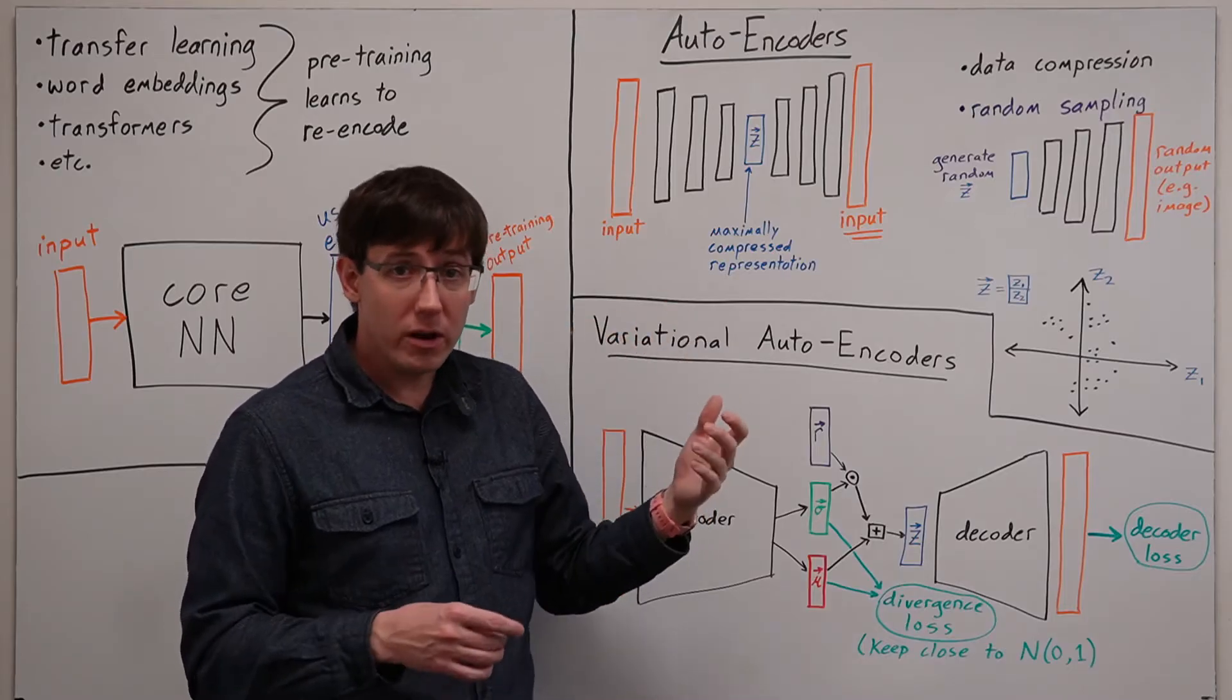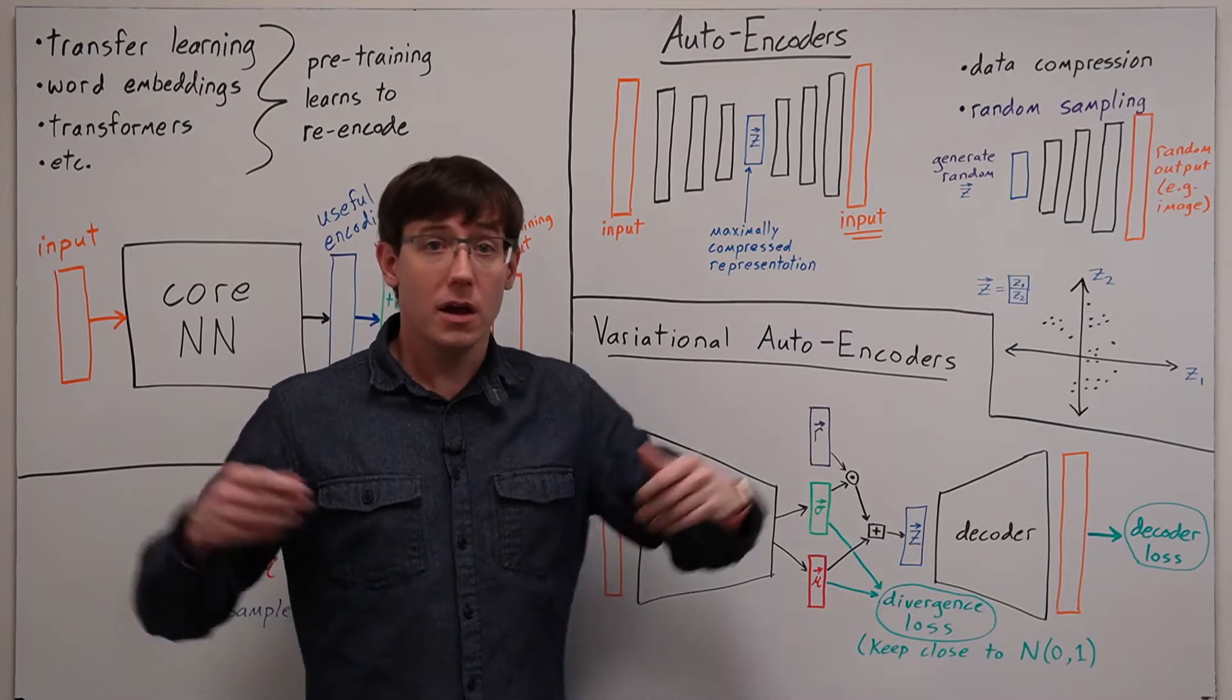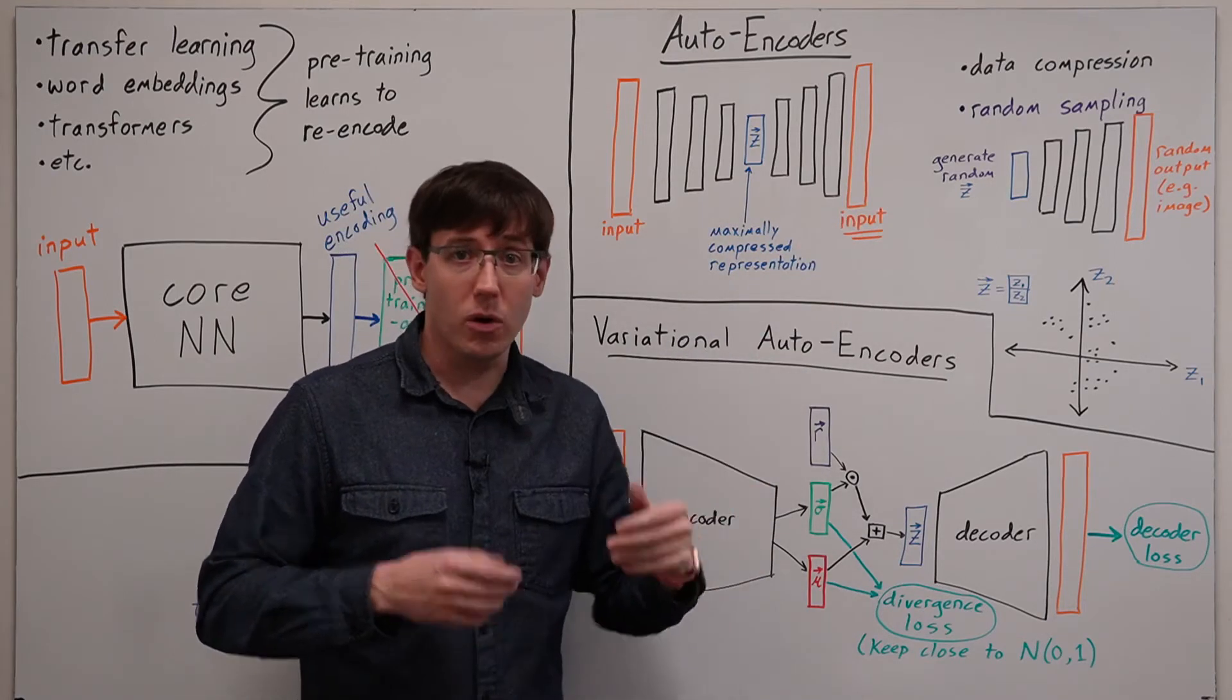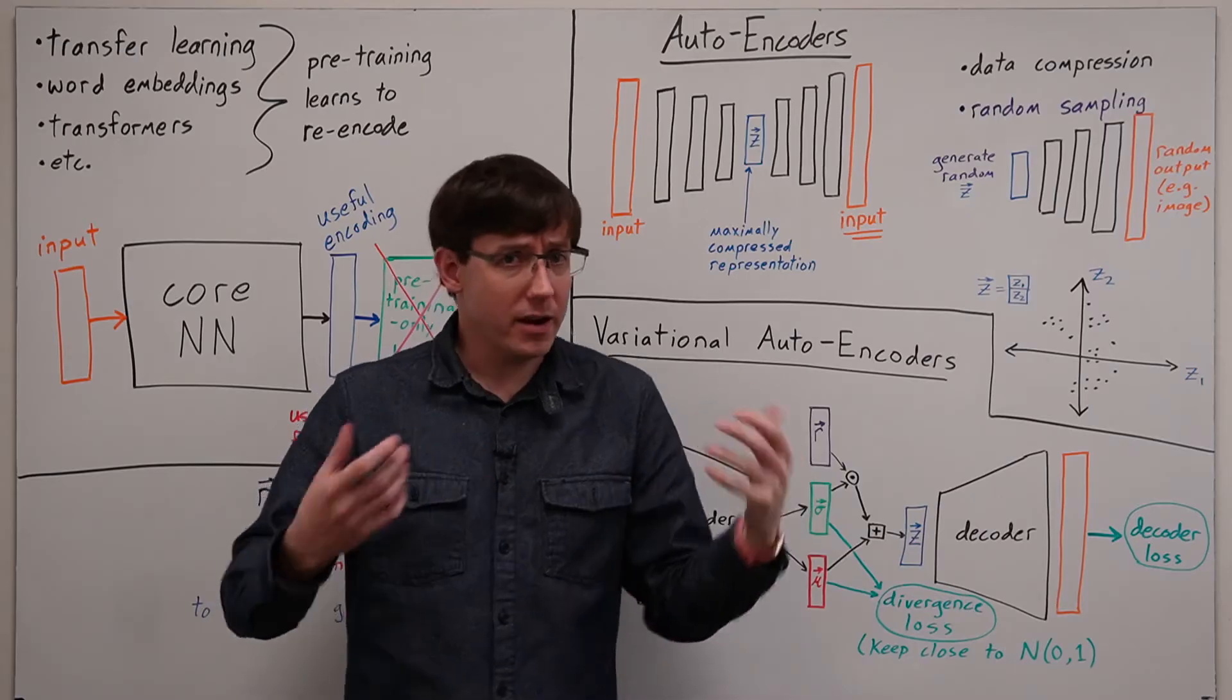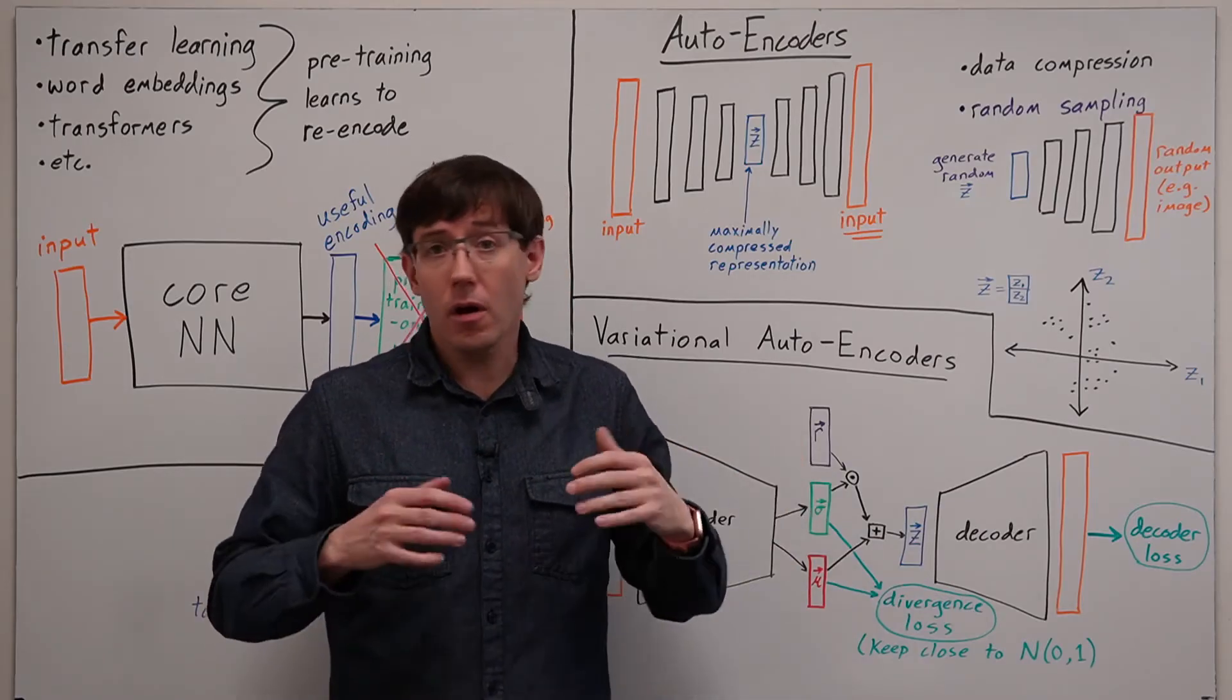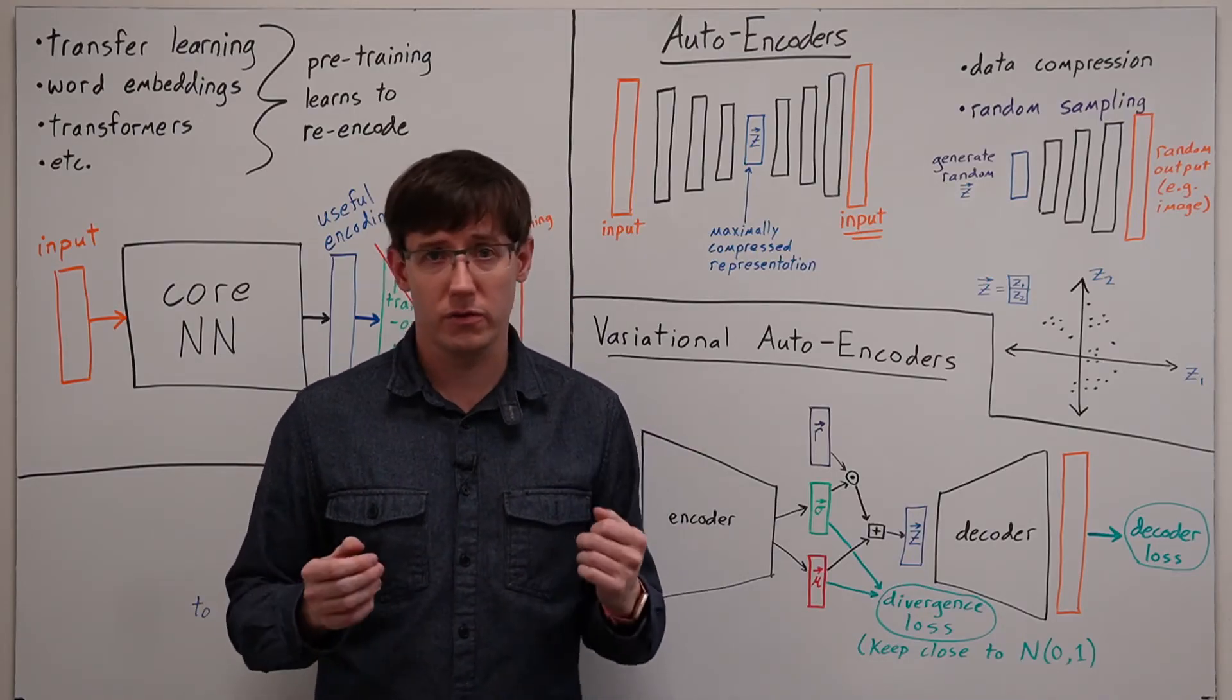then we could think of the first half of this network as performing 20 to 1 compression, and the back half of the network as performing decompression. But this idea of using a neural network to perform data compression isn't actually all that useful. There are way better non-learning-based algorithms for compressing various sorts of data.